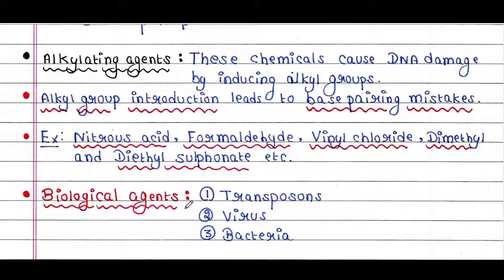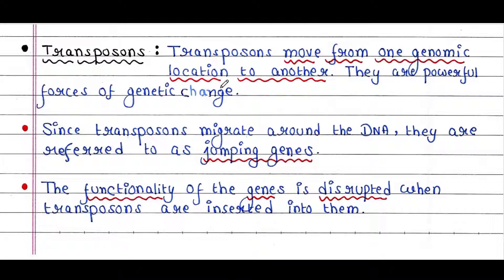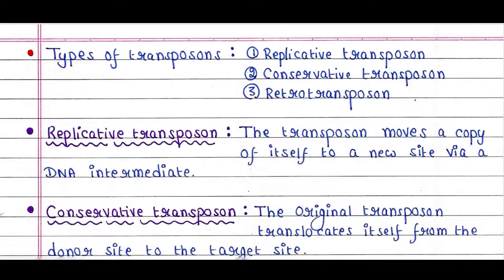There are three different biological agents which cause DNA mutation: transposons, viruses, and bacteria. Transposons move from one genomic location to another and are powerful forces of genetic change. Since transposons migrate around the DNA, they are referred to as jumping genes. The functionality of genes is disrupted when transposons are inserted into them. There are three types of transposons: replicative transposons, conservative transposons, and retrotransposons.